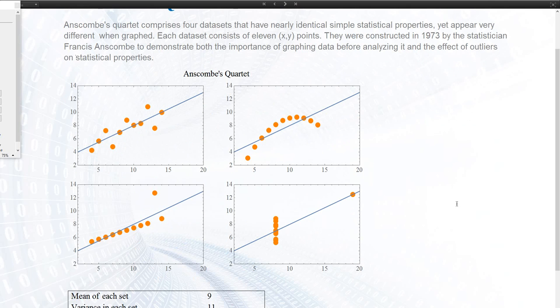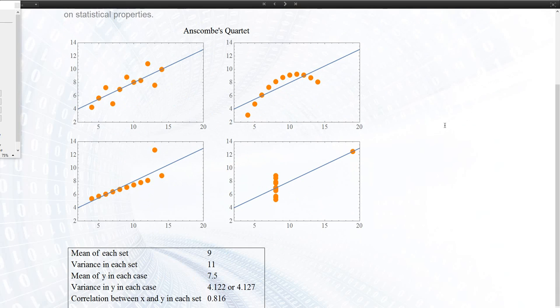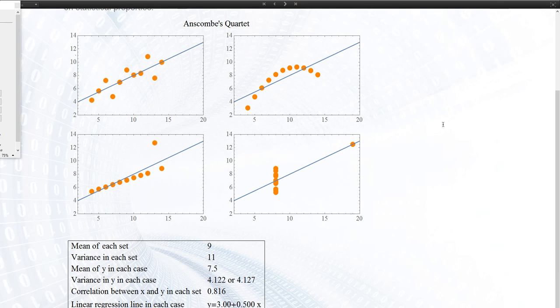The most important rule is to look at your data. To explain why this is important, French statistician Francis Anscombe constructed four datasets. It's called Anscombe's Quartet.